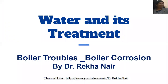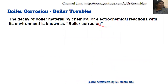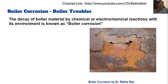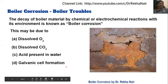Hello friends, today we will be discussing about another boiler trouble: boiler corrosion. In the previous video, we had discussed about sludges and scale, which was also a boiler trouble. The decay of boiler material by chemical or electrochemical reactions with its environment is known as boiler corrosion. You can see the effect of boiler corrosion here. This may be due to dissolved oxygen, dissolved carbon dioxide, acid present in the water, or galvanic cell formation — four different reasons for boiler corrosion.